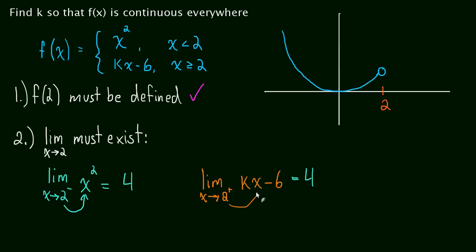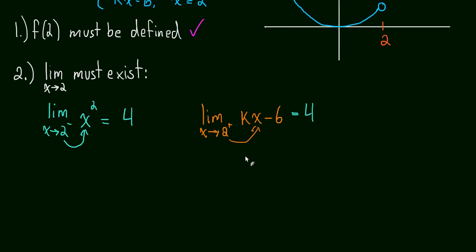So, we're going to plug this 2 in and move from there. So, this will be k times 2 minus 6 equals 4. Add 6 to both sides and we get 2k equals 10. Of course, that means k is equal to 5. So, when k is equal to 5, the limit exists and the limit is equal to 4.